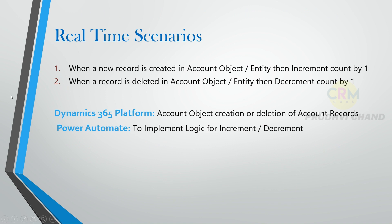Next we will look at some real-time scenarios. We will take two: when a new record is created in the Account entity, increment count by 1; and if the record is deleted in the Account entity, decrement count by 1. For this we need two platforms — Dynamics 365 to create or delete account records, and Power Automate to implement the logic.